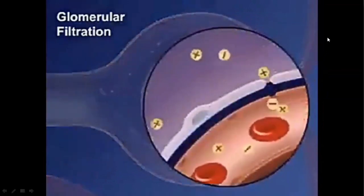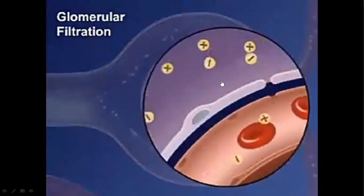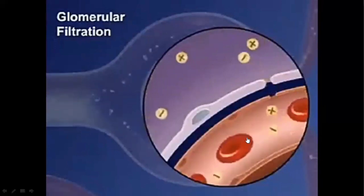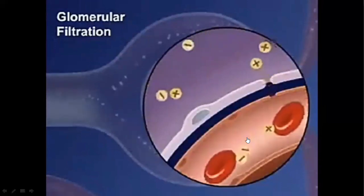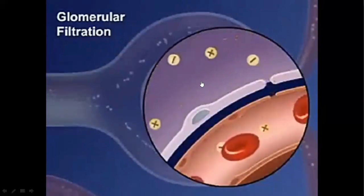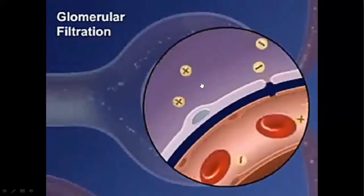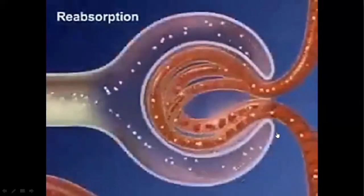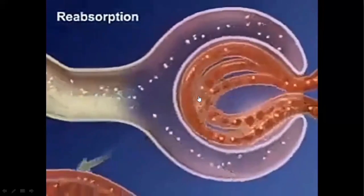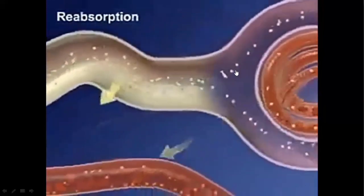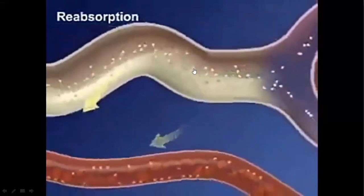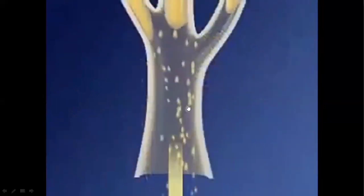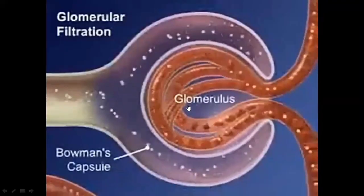From the blood, small particles — solutes, plasma, and excess water — are filtered out from the glomerulus into Bowman's capsule. Blood cell components are not filtered out through these small pores. The plasma filtered from the glomerular capillaries forms the filtrate, which then enters the tubular portion of the nephron, where excess substances are absorbed.